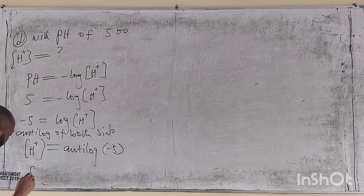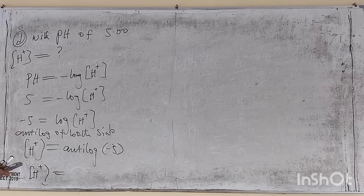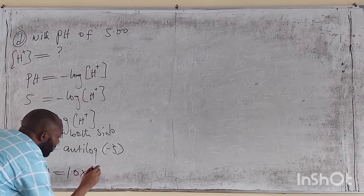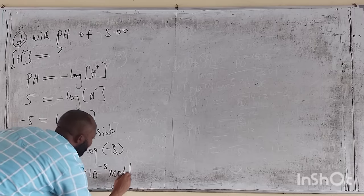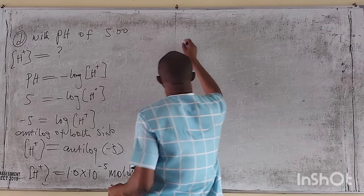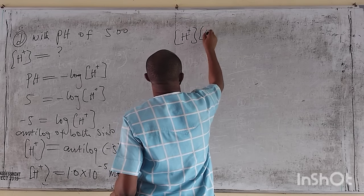Taking the anti-log of minus 5, the hydrogen ion concentration is 1.0 times 10 raised to minus 5 mol/dm³. When the pH is 5, the hydroxide ion concentration becomes: since the product of H⁺ and OH⁻ equals 10 raised to minus 14, we use this relationship.